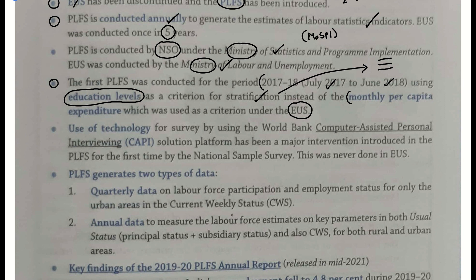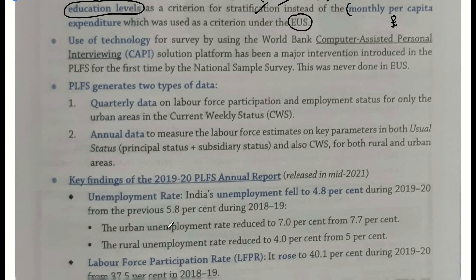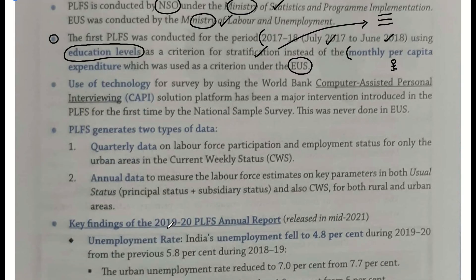Monthly per capita expenditure yaani har person ki kamaai ek mahine ke andar, uska ghar kharch wagera sab kuch nikaalkar ke kitna uske paas bach raha hai — bach raha bhi hai ki nahi bhi bach raha — aisa toh nahi hai ki amdani athanni kharcha rupaya. Toh aapke dimag mein question yeh aaya hoga: Sir yeh education level ko kyun dekha jaata hai yeh karne ke liye? Kyunki hamare desh ki 2017-18 mein vastavikta yeh dekhi gayi — jo person jitna educated hai, uske itne hi better chances hain ki kahin na kahin woh roti ek achhe level pe kha raha hoga.